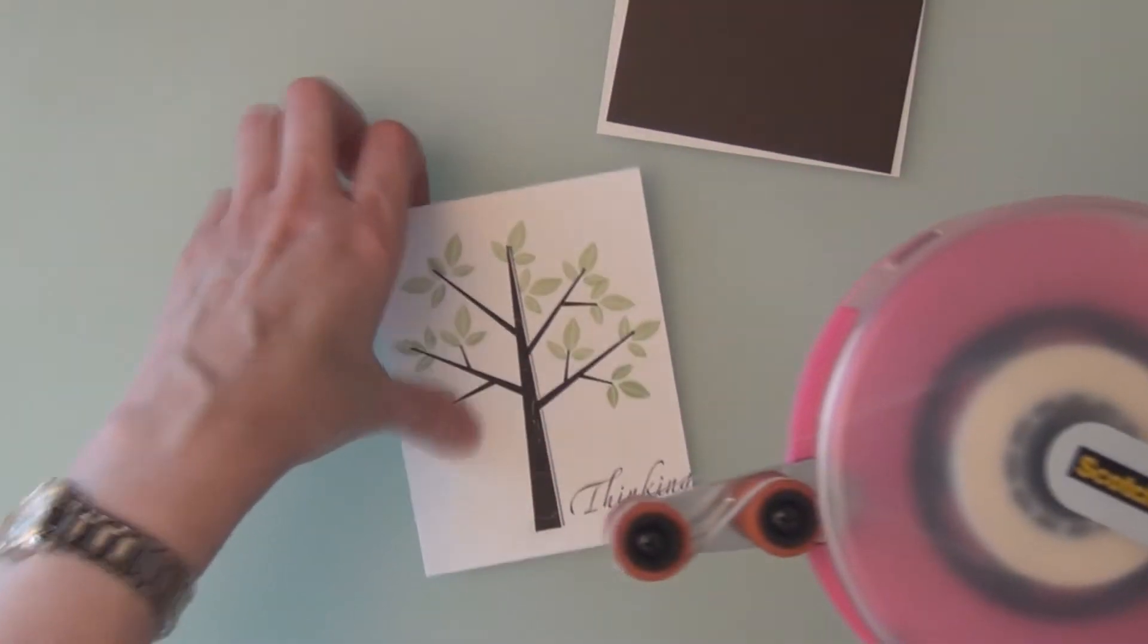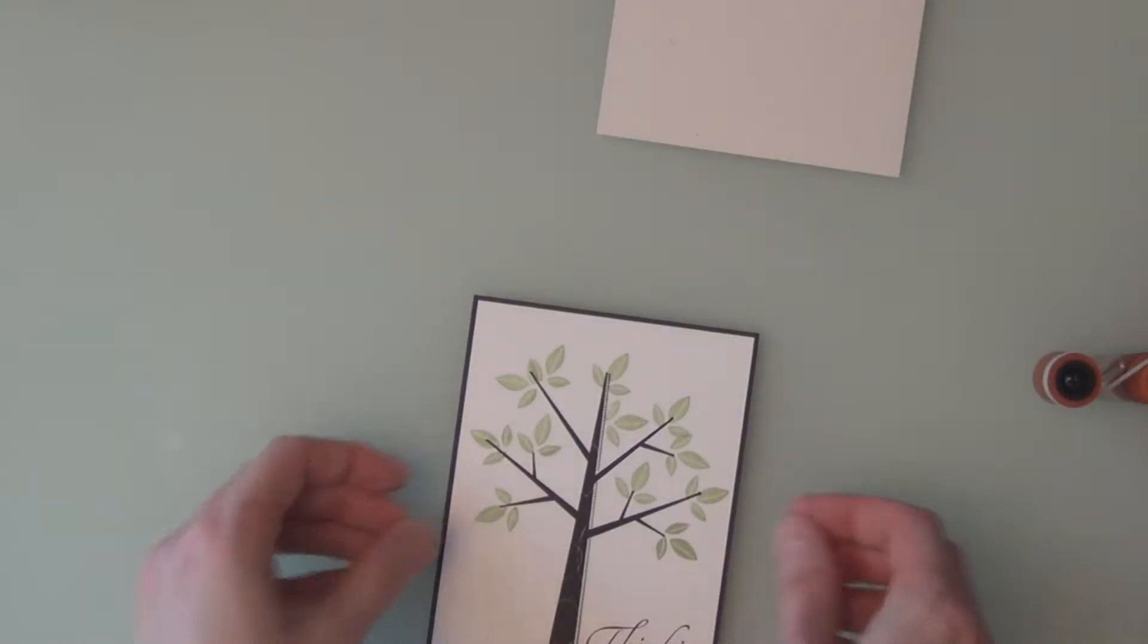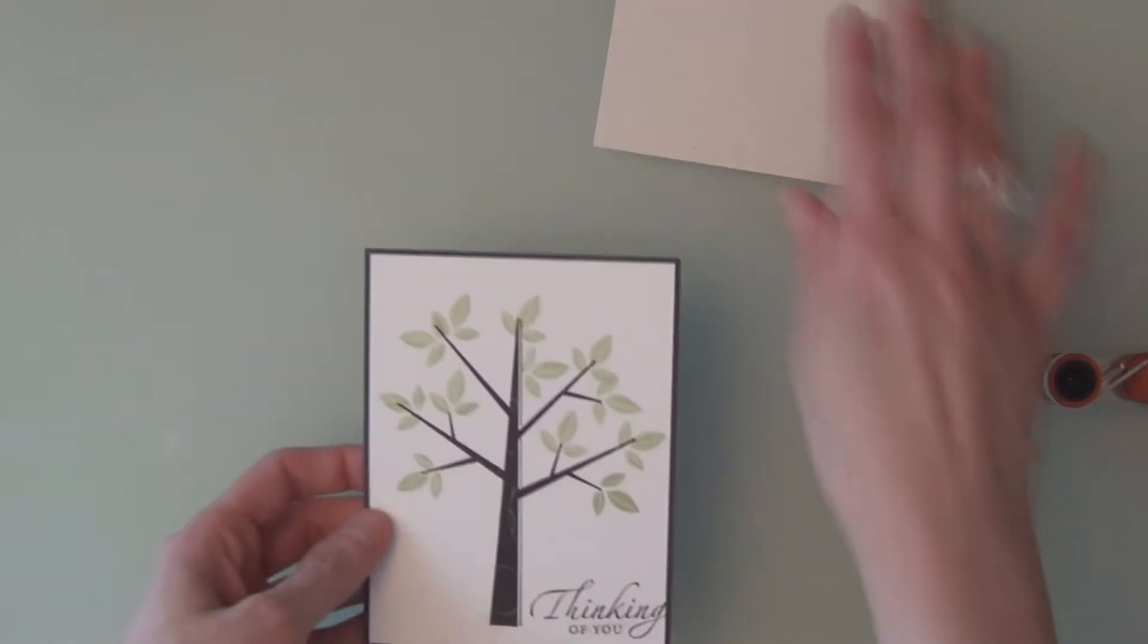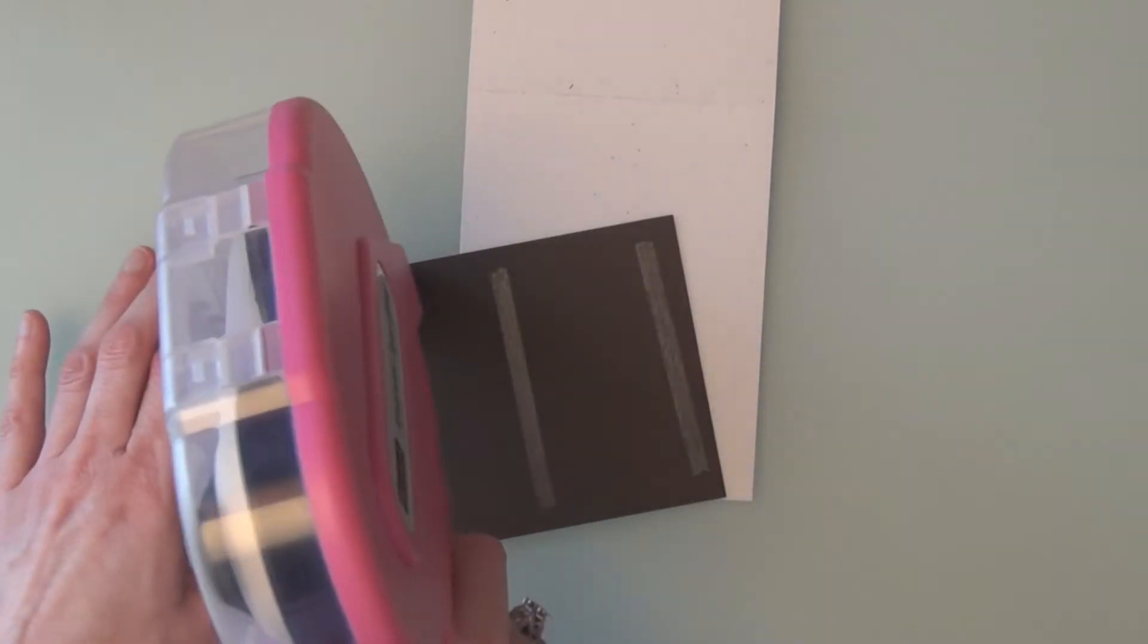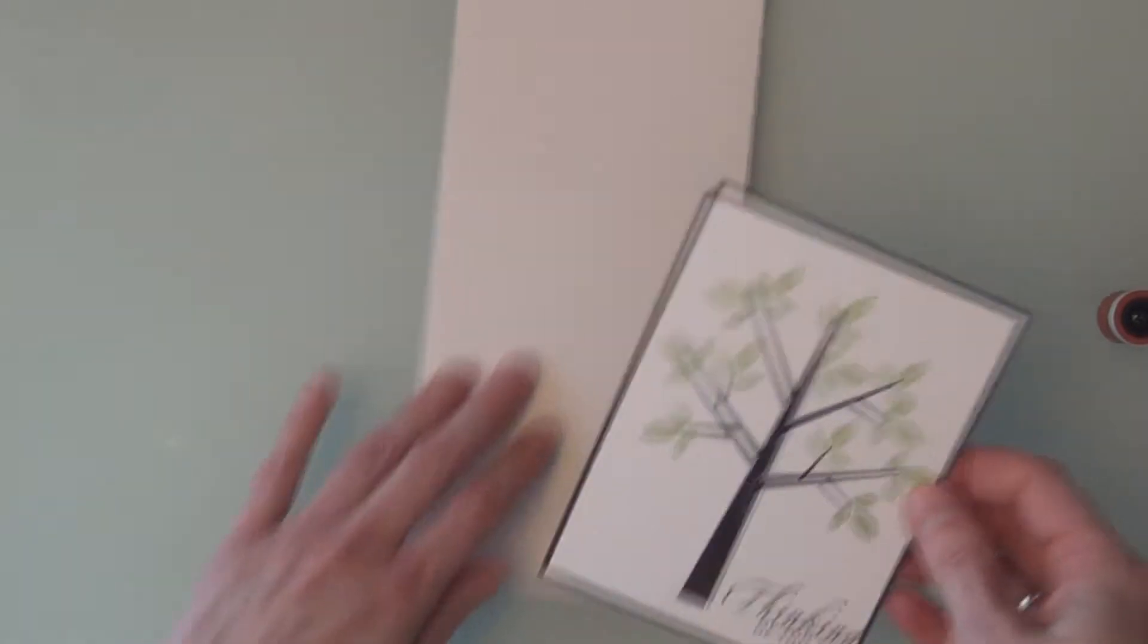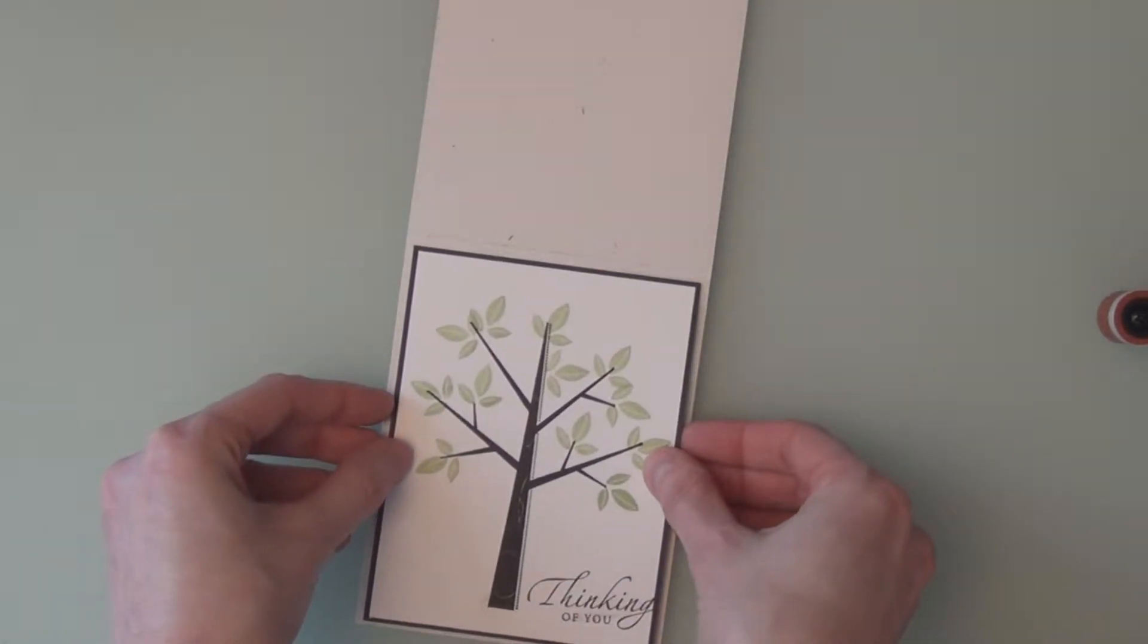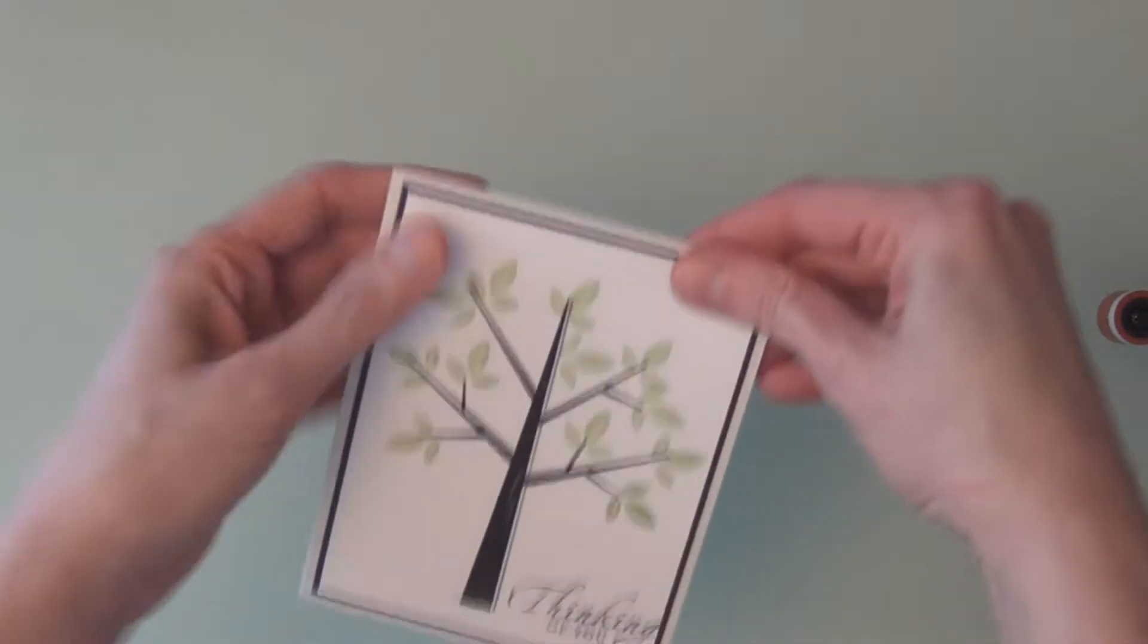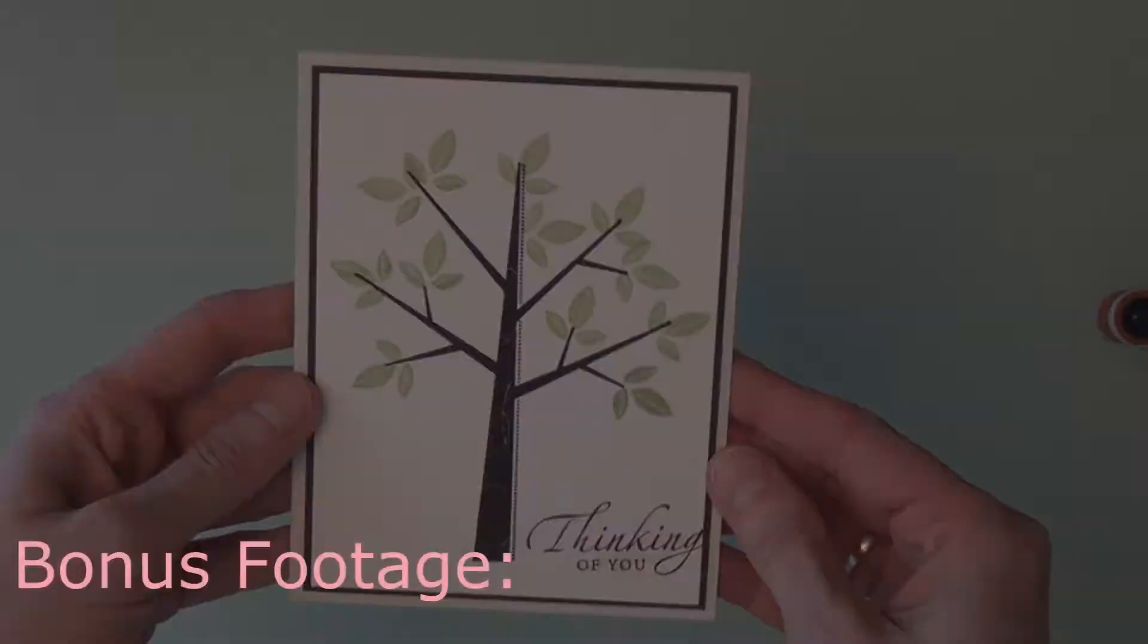I'm going to get my ATG gun. Layer my main focal image on the Early Espresso. And then I'm going to layer that on the card base. There you go. There's the card in a hurry.